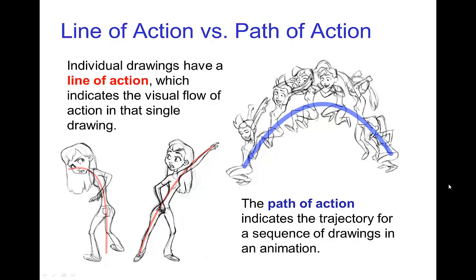On the other hand, the path of action is the visual flow for a sequence of drawings—the trajectory that is indicated through a sequence of drawings. An easy way to remember the difference is the line of action is for a single drawing and path of action would be for a sequence of drawings.